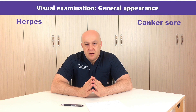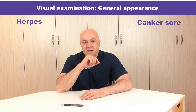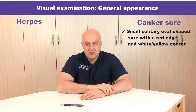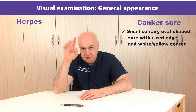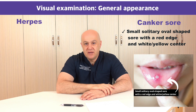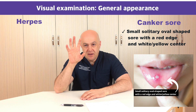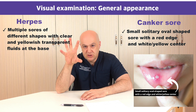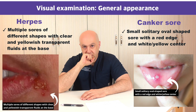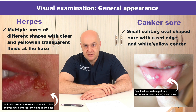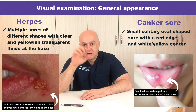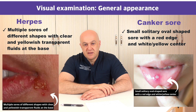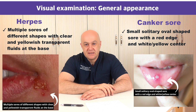Looking at the general appearance of the sores: canker sore is usually solitary — a single sore — oval shaped with red edges and a white or yellowish center. Herpes, unlike canker sore, has multiple sores clustered together that are irregularly shaped, close to each other. The base of the herpes sore usually has clear transparent fluid, or is crusted depending on the herpes stage.